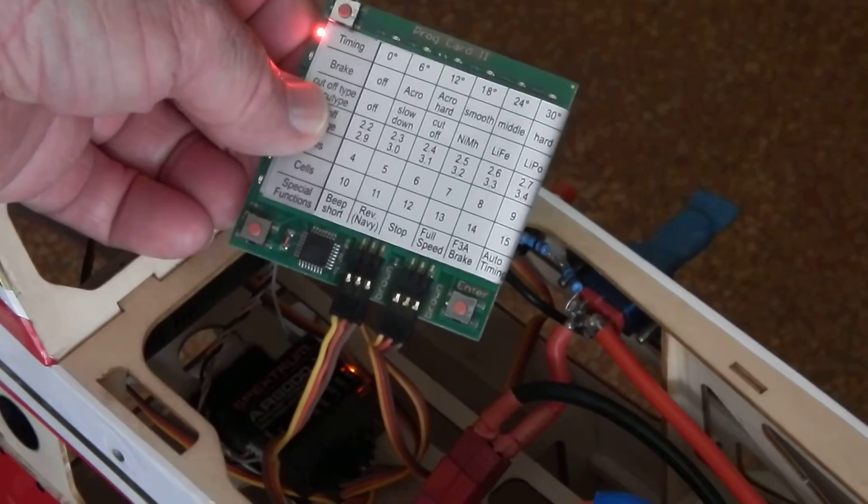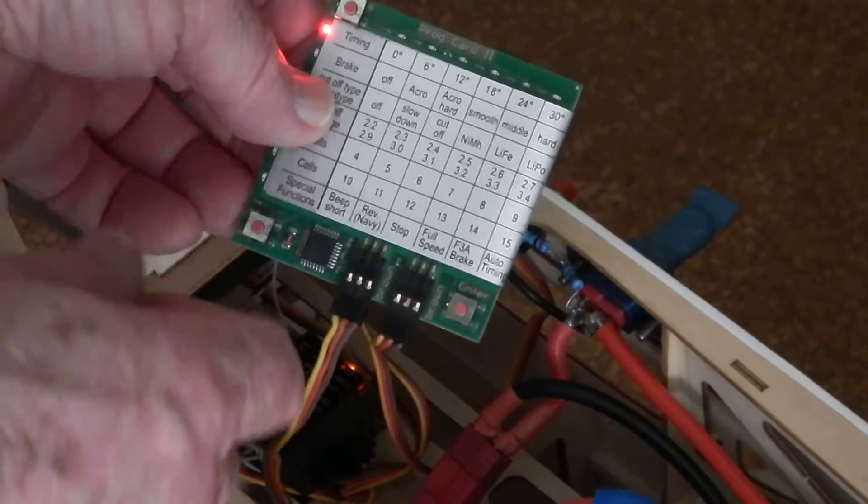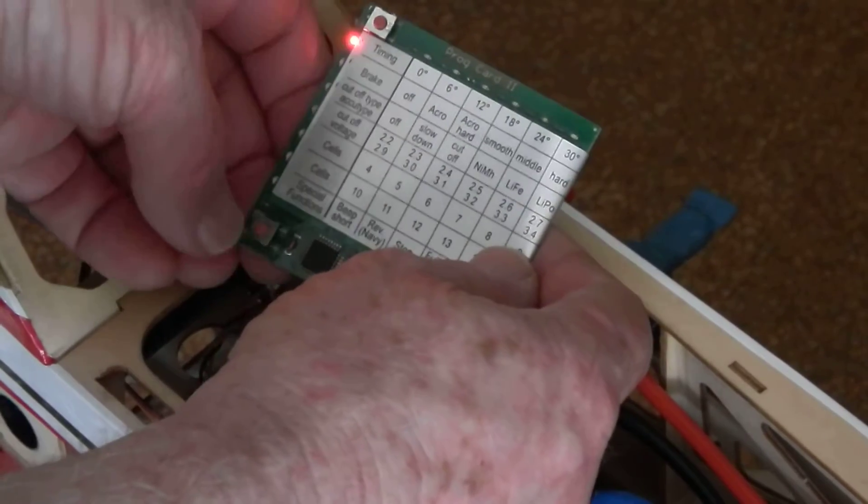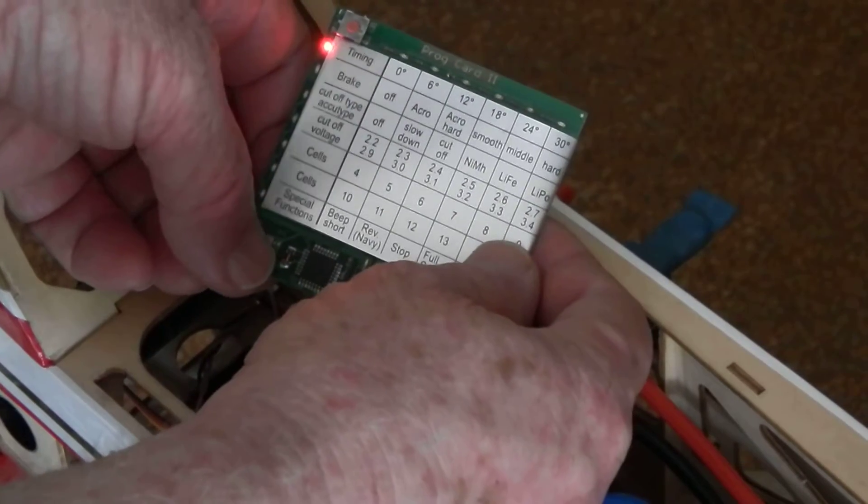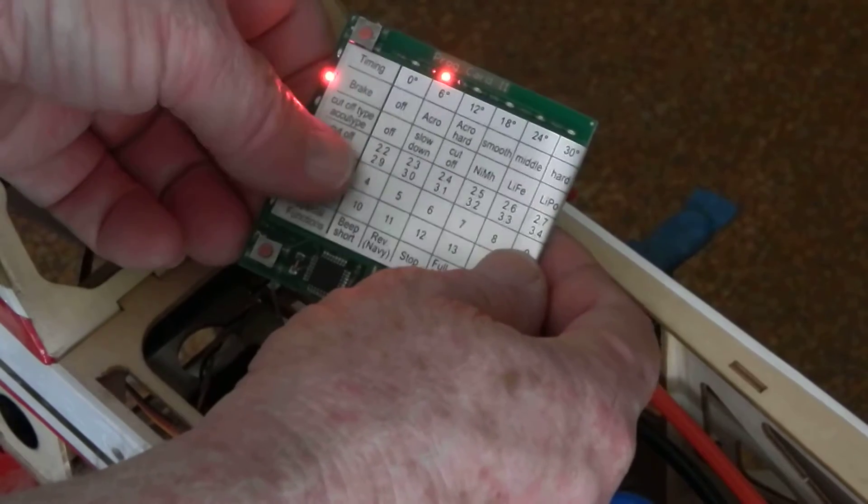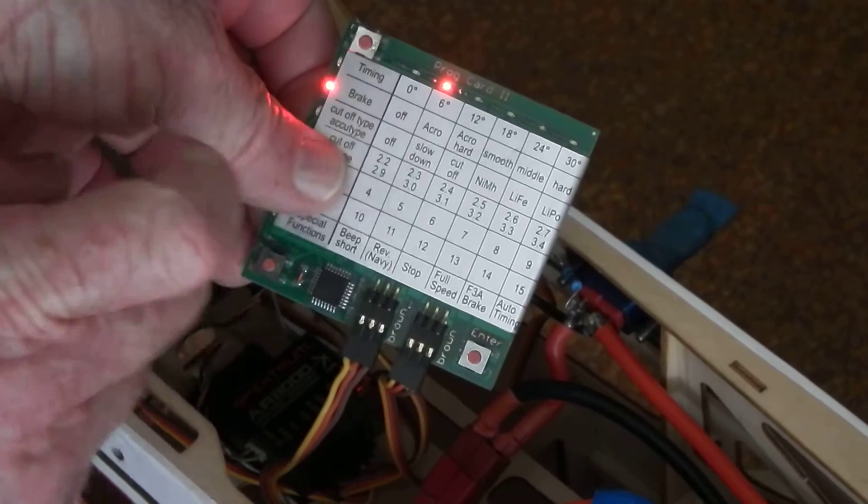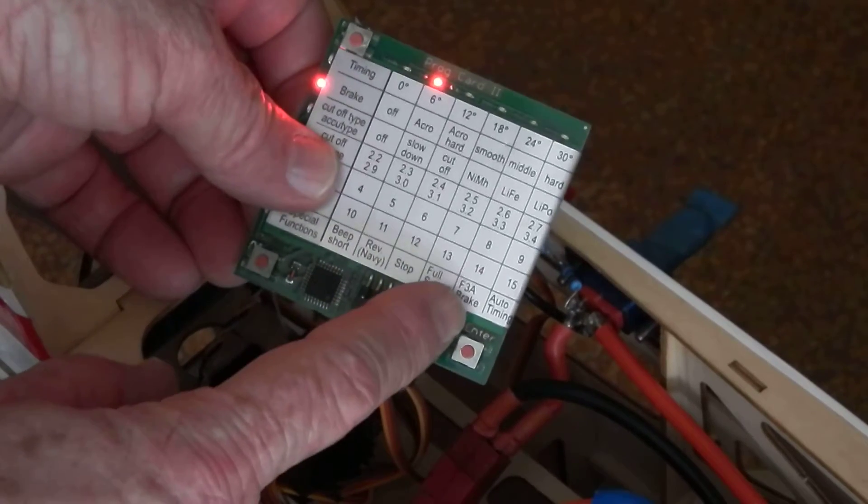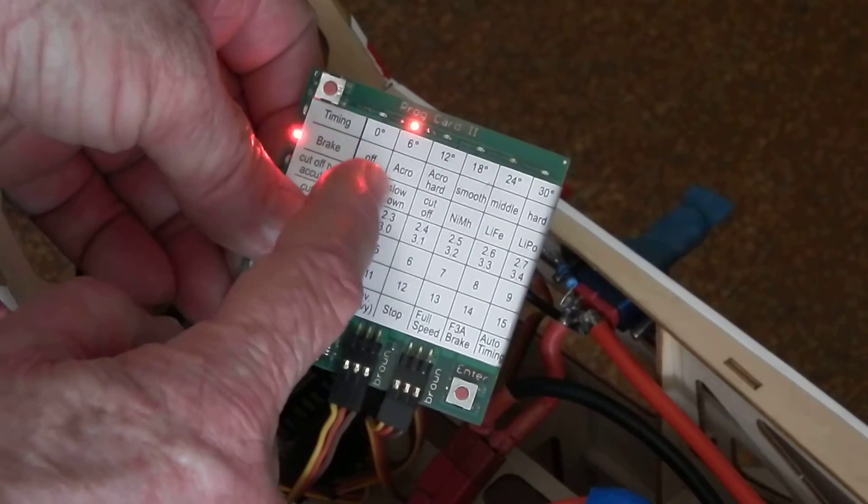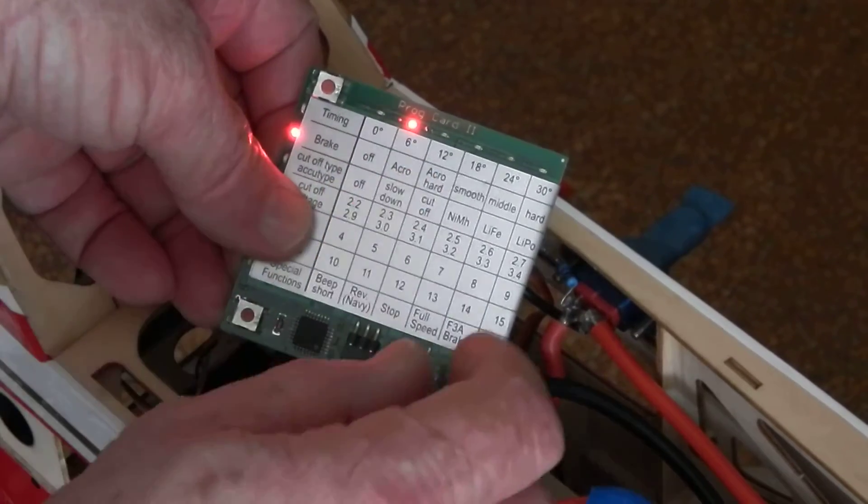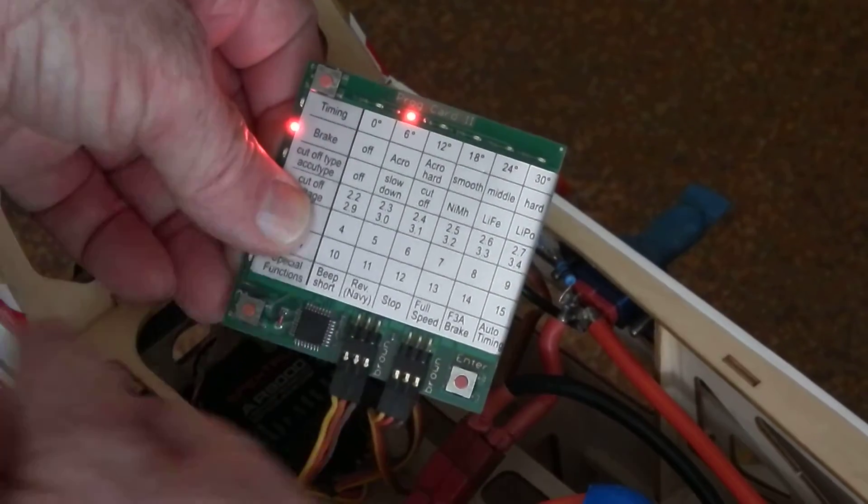We want first the brake row. Now if you have the brake row set on off, you will have no F3A braking, so you absolutely must have the brake row set on either acro or acro hard, and just press the saver.